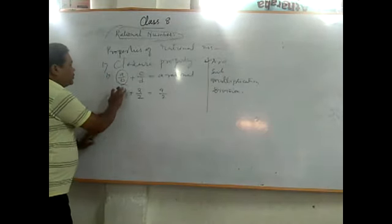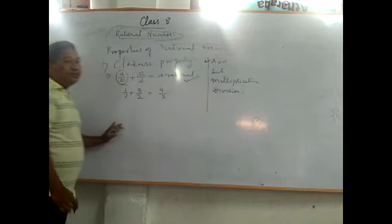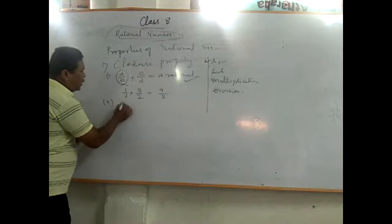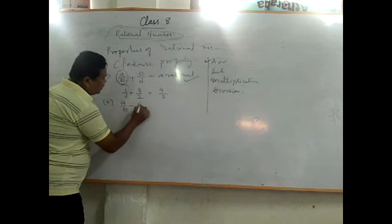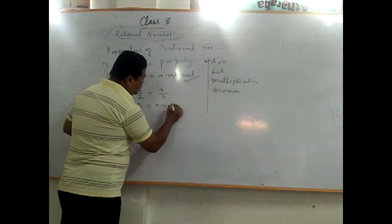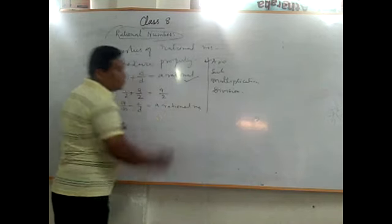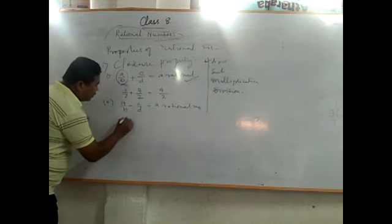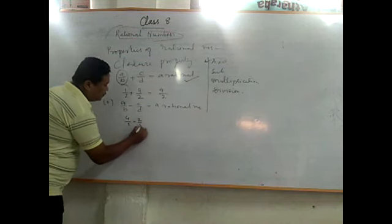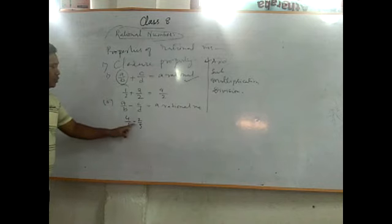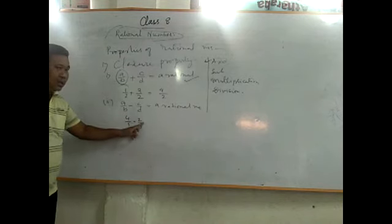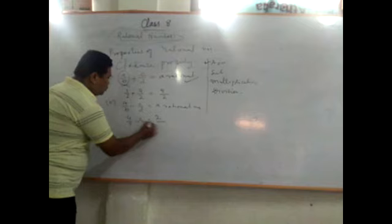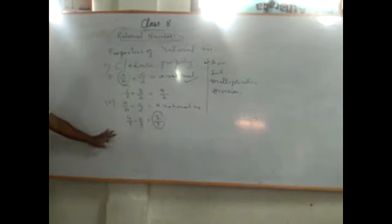For subtraction: a by b minus c by b gives a rational number. For example, 4 by 5 minus 2 by 5 equals 2 by 5, which is again a rational number. So closure property is also applicable in subtraction.